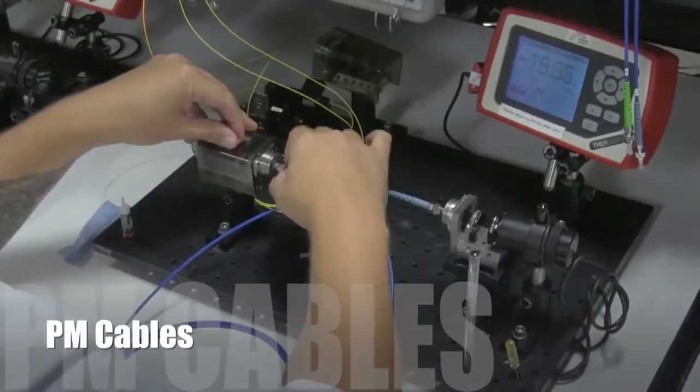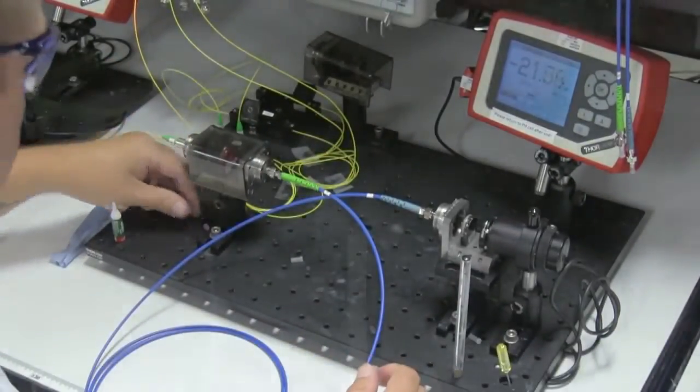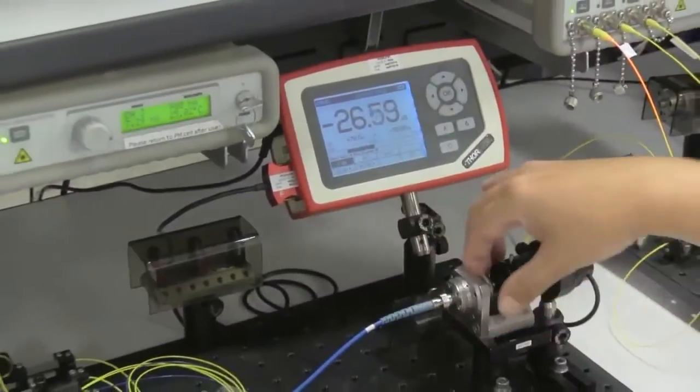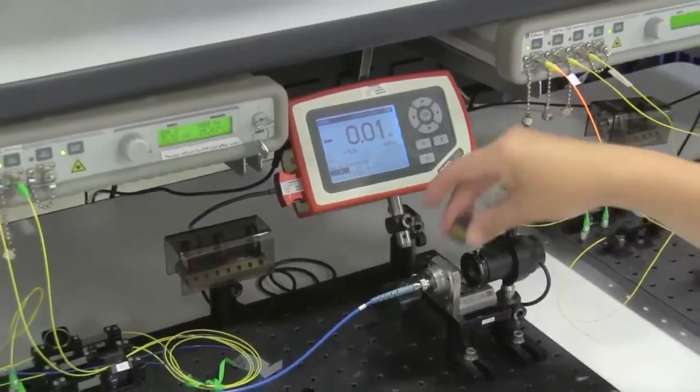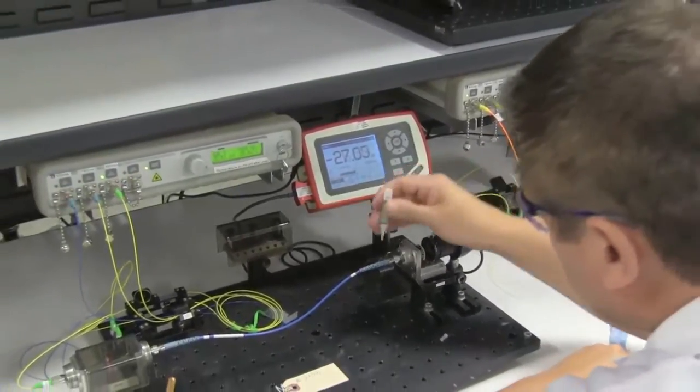Thorlabs optically aligns all of our polarization maintaining patch cables to the slow axis in an alignment setup constructed primarily of Thorlabs parts. A technician lines up the stress rod in the fiber with the connector key and then epoxies the connector in place.